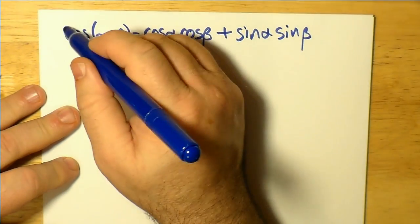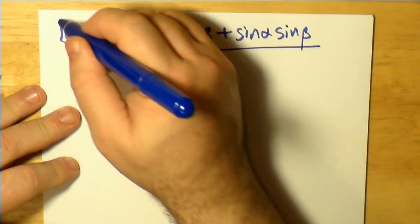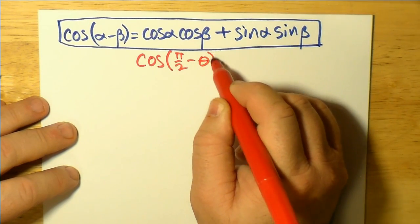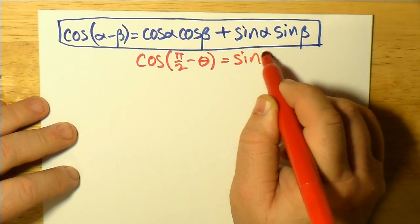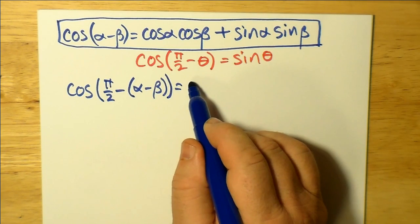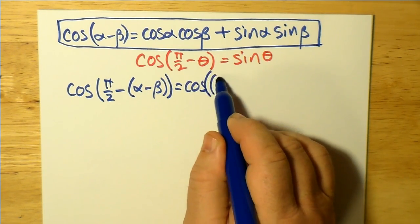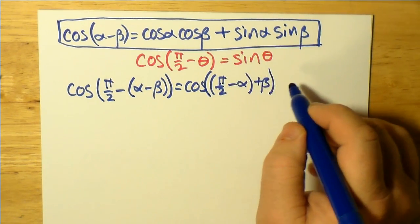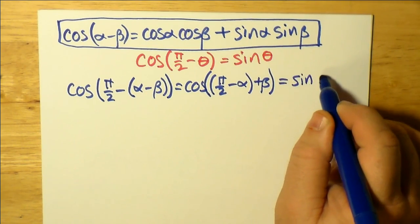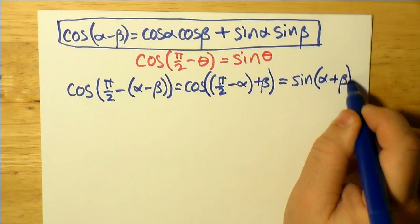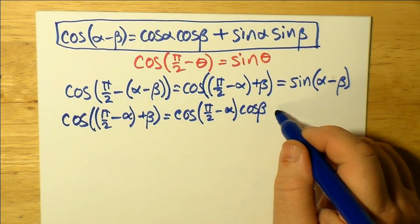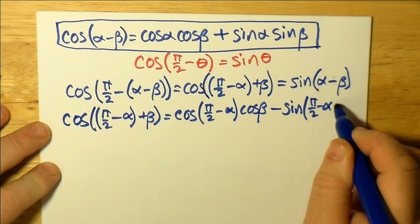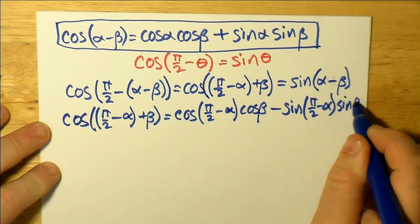Just to remind ourselves of that initial formula, let's put it up there. Now we're going to attempt to derive the sine functions. We do this by using the transformation cos(π/2 − θ) = sin(θ). If we treat α − β as a single angle, we can write π/2 minus (α − β), and rearranging the brackets gives us a favorable formula for sin(α − β), which can be built on cos(α + β).